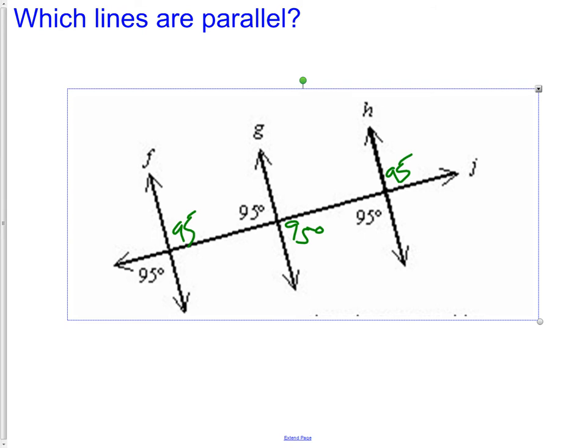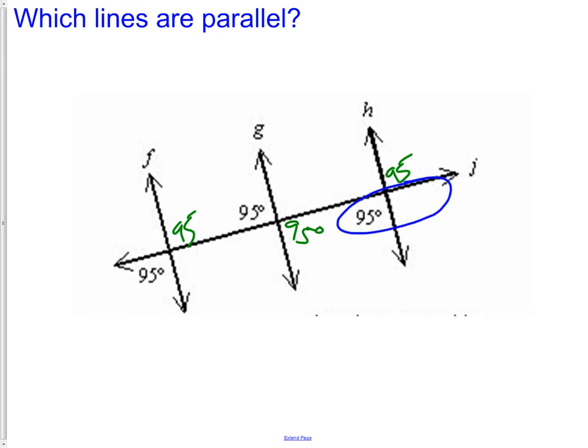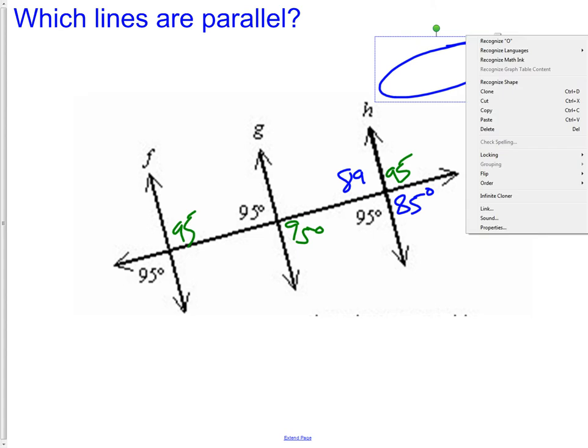Now I could also use something like a linear pair. Linear pairs of angles are supplementary. That way I can use the two angles right here. One of them is 95 and the other one then would have to be 85. The reason is they are a linear pair of angles. Now we have the 85 for the bottom right. We can say the one in the top right also has to be 85. The reason is they are a linear pair of angles.